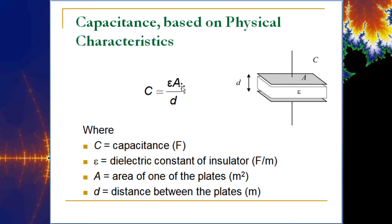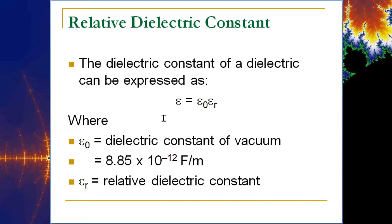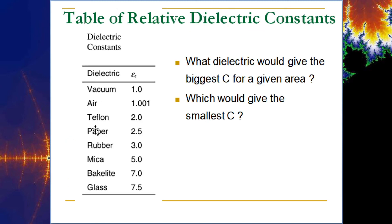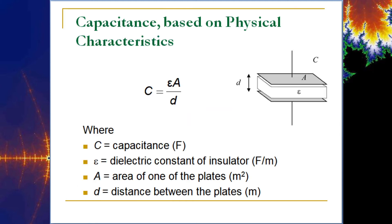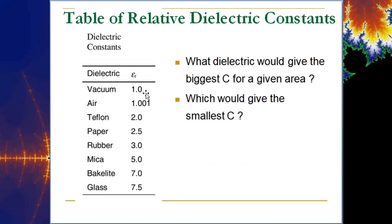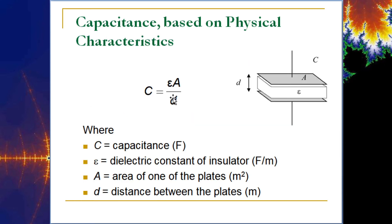The permittivity epsilon in the formula is expressed as epsilon sub r times epsilon sub zero — the relative dielectric constant relative to a vacuum. The dielectric constant chart lists materials including vacuum, air, Teflon, paper, rubber, mica, Bakelite, and glass. Glass gives the biggest capacitance for a given area, with a multiplier of 7.5. A vacuum gives the smallest capacitance, multiplying by just one.